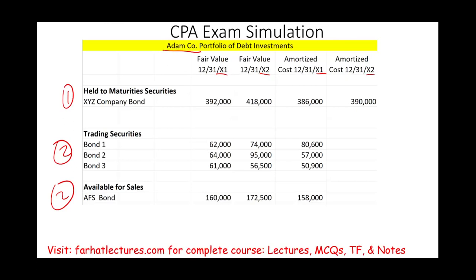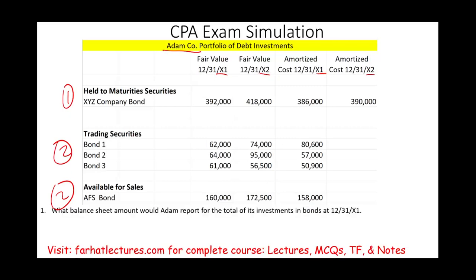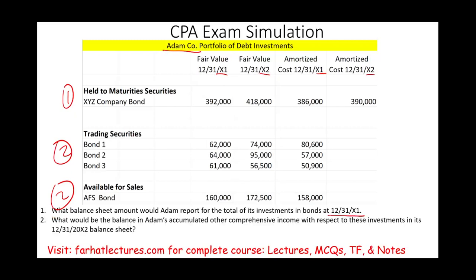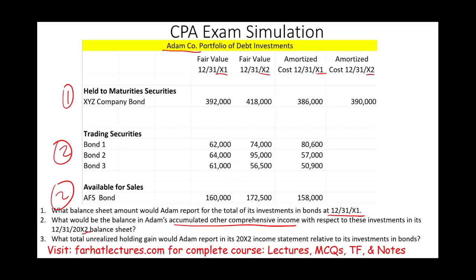For this simulation, I could ask you 10 to 15 different multiple choice questions easily, or I can give you a simulation and ask you to answer a few questions about the data given. I'm going to make it a simulation and ask you three specific questions: What balance sheet amount would Adam report for the total investments in bonds for year X1? What would Adam's accumulated other comprehensive income be in year X2? And what total unrealized holding gain would Adam report in the X2 income statement?